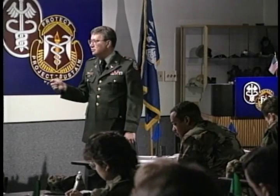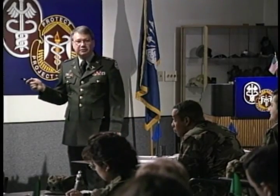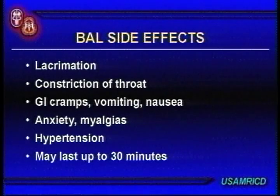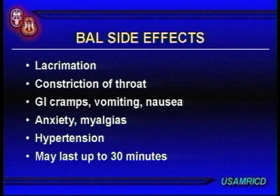There is a specific antidote for lewisite, unlike mustard which is totally supportive. British Anti-Lewisite (BAL), or dimercaprol, was developed in World War I. BAL is a heavy metal chelator — it chelates lewisite because arsenic is in the molecule. It also works for other heavy metal poisonings. It comes in three forms: topical, ophthalmic, and systemic. There are side effects to BAL — not showstoppers, but things you'd rather not experience if you didn't need it.